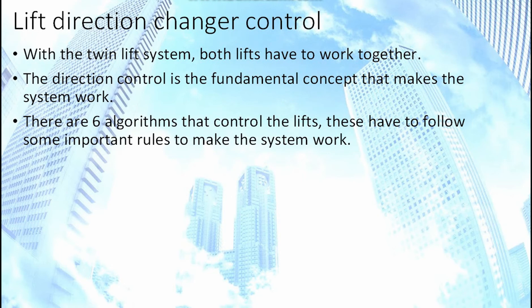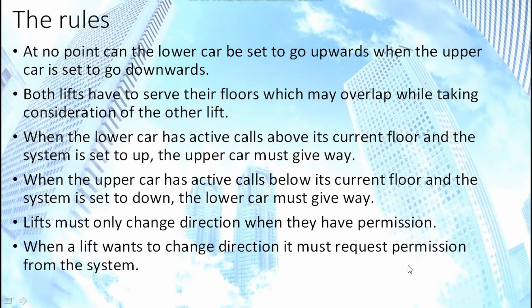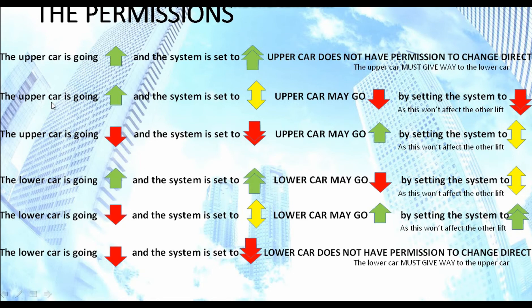Lift direction changer control: with the twin lift system both lifts have to work together and share the shaft space. The direction control is a fundamental concept which makes the system work — it manages when which lift can go where within the shaft. There are six algorithms to control this. The rules are: at no point can the lower car be set to go upwards when the upper car is set to go downwards; both lifts have to serve their floors, which may overlap, while taking consideration of the other lift; when the lower car has active calls above its current floor and the system is set to up, the upper car must give way; when the upper car has active calls below its current floor and the system is set to down, the lower car must give way. Lifts may only change direction when they have permission from the system.